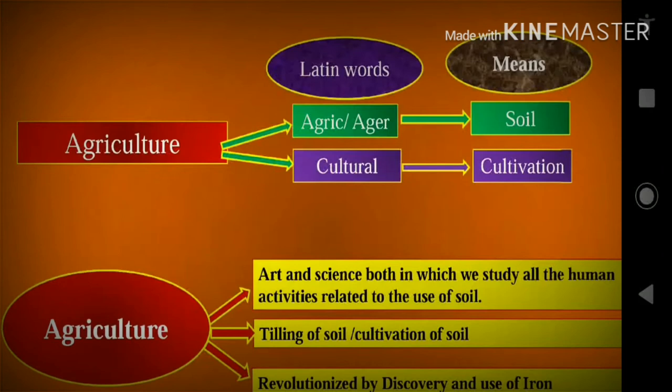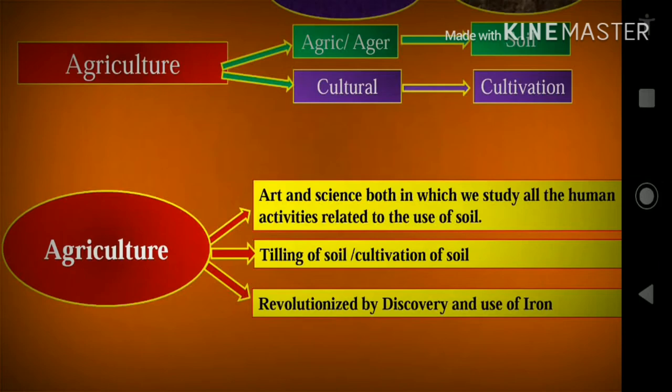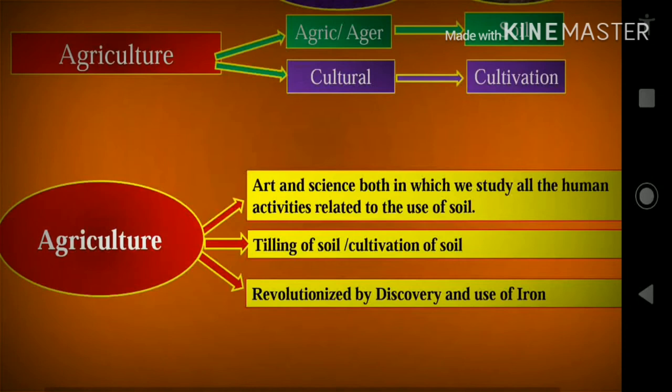What is agriculture? Agriculture is coming from two Latin words. The first one is agri or ager, which means soil. The second Latin word is cultura, which means cultivation. Agriculture is nothing but the art and science in which we study all human activities related to use of soil. It is also called tilling of soil or cultivation of soil.